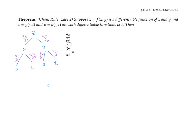Now to find dz/ds, I just need to follow the branches of the tree that end in the variable s. That gives me the formula: partial z partial s equals partial z partial x times partial x partial s plus partial z partial y times partial y partial s.